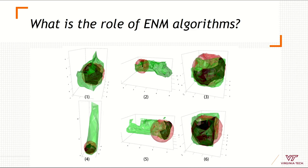Also, the algorithms that researchers use to reconstruct the ecological niche present a challenge. This example shows how algorithms can behave differently under different environmental situations or datasets. If I assume my fundamental niche will have an ellipsoidal form, a series of algorithms may fail to reconstruct that shape.